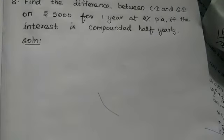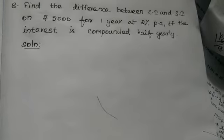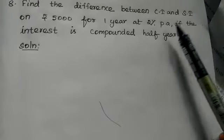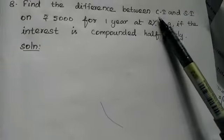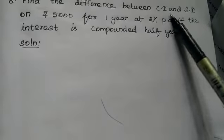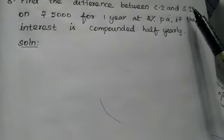Now what is the meaning of difference between CI and SI? CI means compound interest, SI means simple interest. Difference between CI and SI.